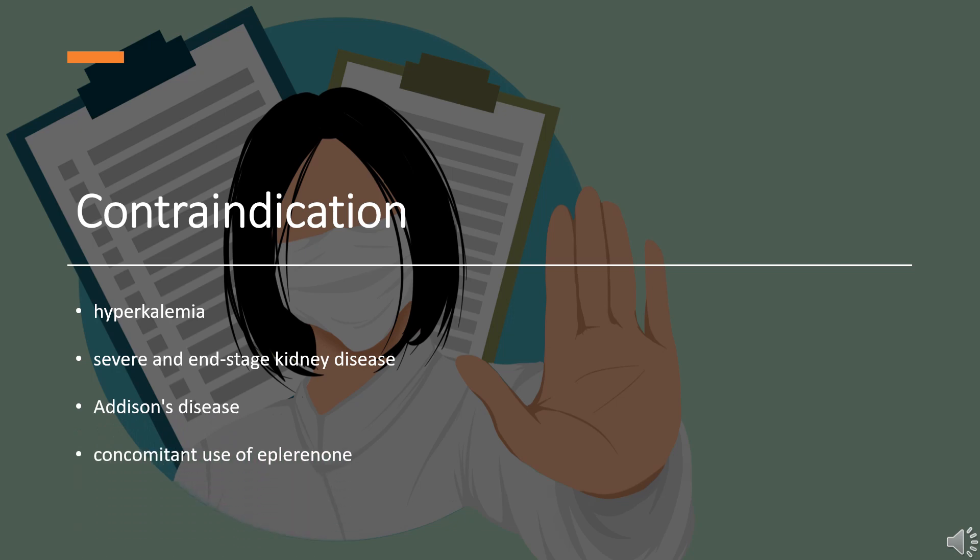Contraindications of spironolactone include hyperkalemia (high potassium levels), severe and end-stage kidney disease due to high hyperkalemia risk, except possibly in those on dialysis, Addison's disease, adrenal insufficiency and low aldosterone levels, and concomitant use of eplerenone.